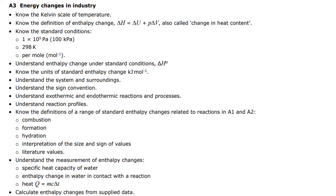This comes from learning aim A3. We're going to look at a definition for enthalpy change, then move on to enthalpy of combustion, formation, and hydration, along with the equations that go with those enthalpy changes. We will also look at interpreting the size and sign of these values. This video will not cover calculations such as mc delta T, which will be carried out in the next video.